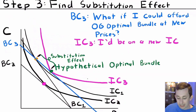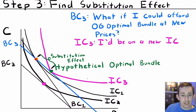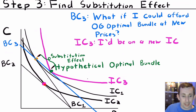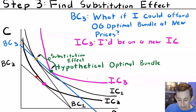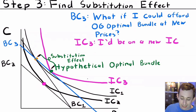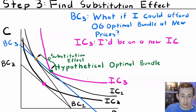What we are going to do next is split this out and find the substitution effect. The substitution effect is going to be a little convoluted, so we'll walk through this slowly. We've started at this orange OG bundle and we've gone to this new pink bundle with the second budget constraint. Now we're going to add a new budget constraint — BC3 — that answers the question: what if I could afford the original optimal bundle at the new prices? I'm going to take the slope of BC2 and shift it out until it passes through the orange point.